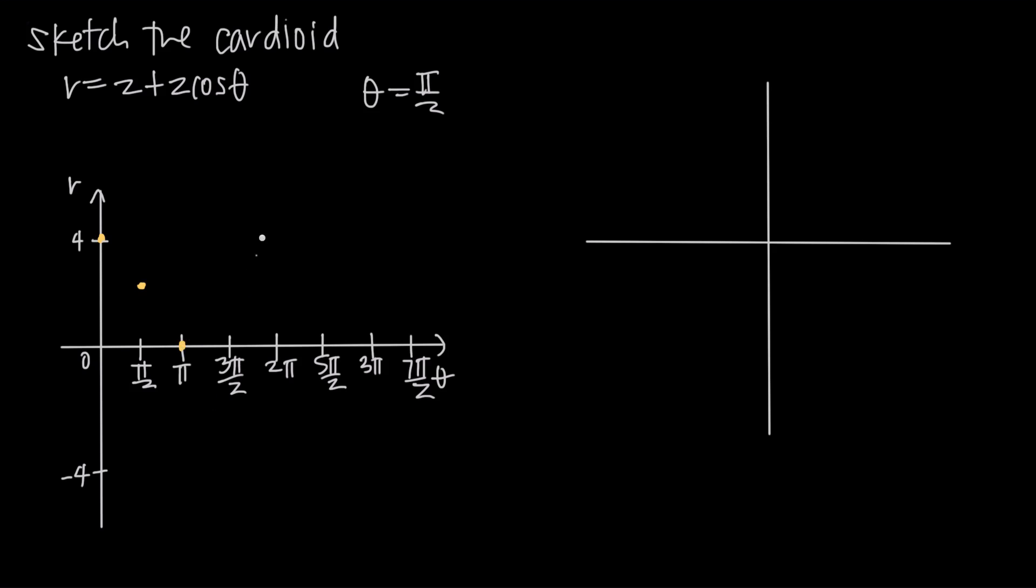Plugging in 3 pi over 2 we get cosine of 3 pi over 2 which is 0. 0 times 2 is 0. 0 plus 2 is 2. So we get this point right here. And then plugging in 2 pi we get cosine of 2 pi which is 1. 1 times 2 is 2. 2 plus 2 is 4. So we get this point right here.